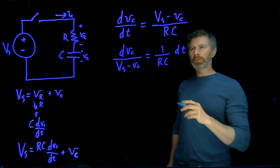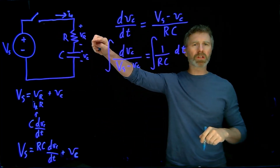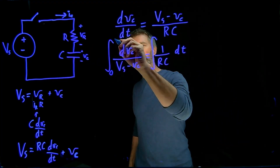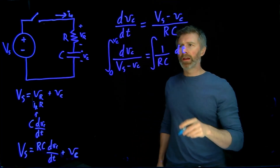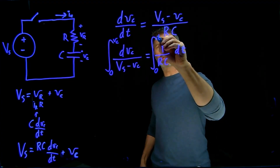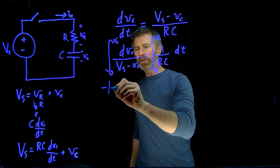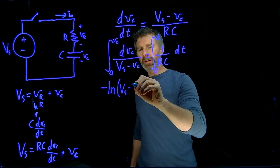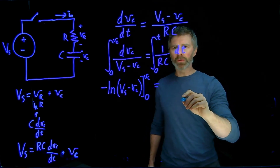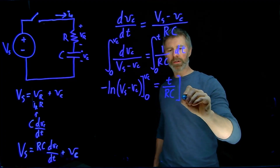Now let's split the terms in the differential part of the expression — putting the Vc terms with dVc and the RC terms with dt. The next step is to integrate both sides. We assume the voltage across the capacitor starts at zero when the switch closes, integrating from zero up to some arbitrary Vc. On the time side, we integrate from zero to some arbitrary time t. The result is: negative log of (Vs minus Vc), evaluated from zero to Vc, equals t over RC, evaluated from zero to t.